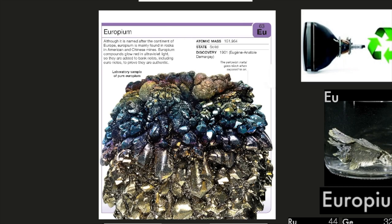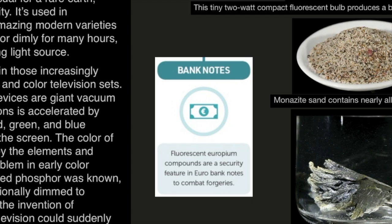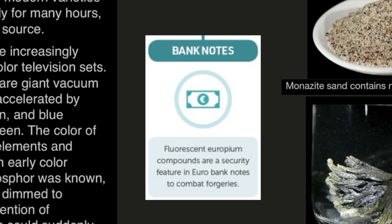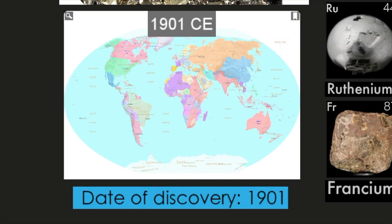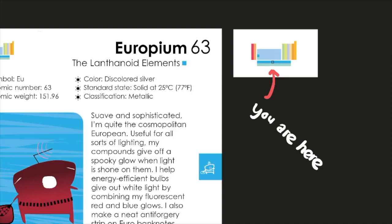Europium, element number 63, chemical symbol EU. Although it's named after the continent of Europe, Europium is mainly found in rocks in American and Chinese mines. Europium compounds glow red in ultraviolet light, so they are added to banknotes, including Euronotes, to prove they are authentic. Fluorescing europium compounds are a security feature in euro banknotes to combat forgeries. Here we have a laboratory sample of pure europium. Its atomic mass is 151.964, its state is a solid, and its state of discovery was in 1901 by Eugene Anatole de Marquet. The yellowish metal goes black when exposed to air. Here we have a map of 1901 CE, Europium's date of discovery.